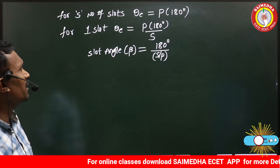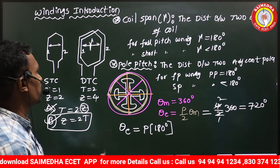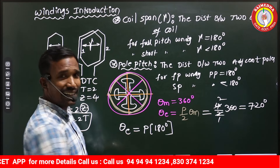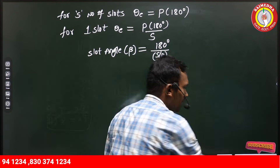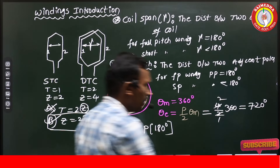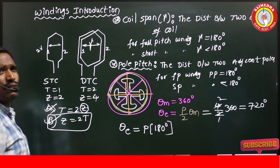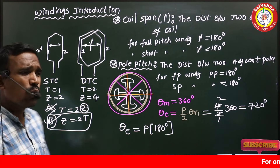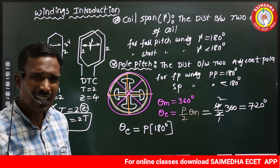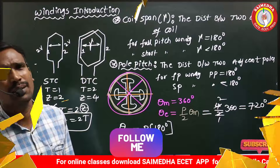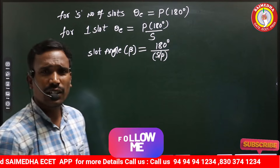So we have three key concepts: coil span, pole pitch, and slot angle. Regarding the relation between conductors and turns: if one conductor produces 2 volts, then a complete turn — having two conductors — produces 4 volts combined. The same principle applies in terms of voltage as well.